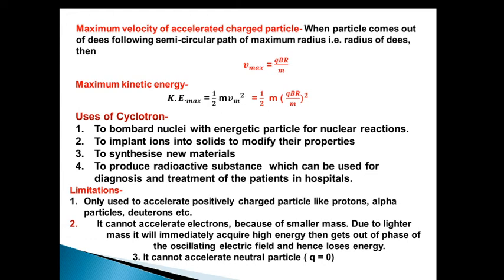Cyclotron has certain limitations. It cannot be used to accelerate neutral particles, that is q = 0. Also, it cannot accelerate electrons due to their smaller mass. If mass is small, it acquires very high energy and then becomes out of phase with the oscillating field. When it becomes out of phase, it loses energy. Only it can be used to accelerate positively charged particles like protons, alpha particles, deuterons, etc.